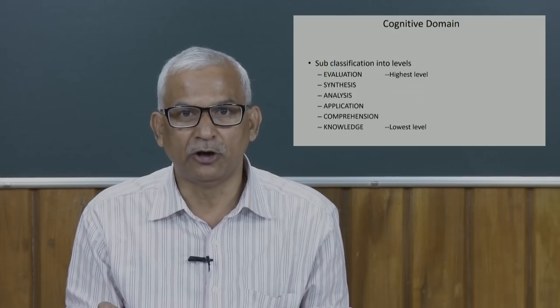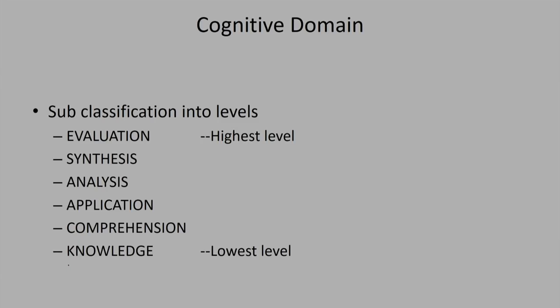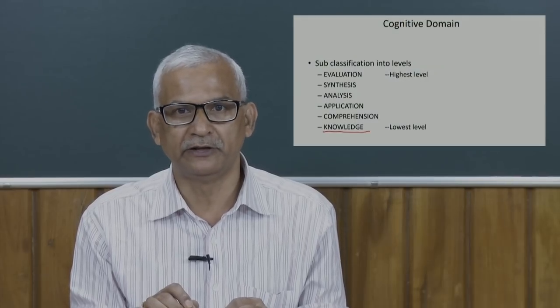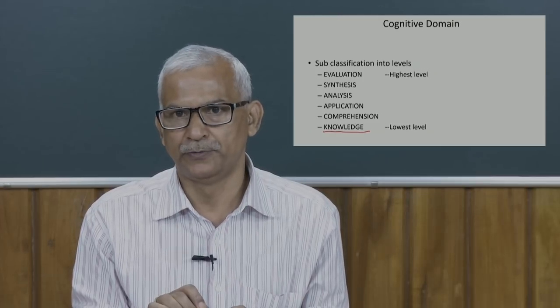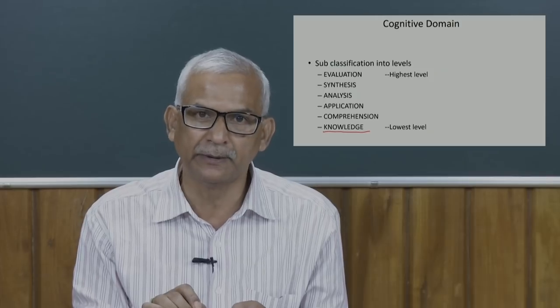There are sub-classifications or levels in every domain. In the cognitive domain, the sub-classifications start from the lowest level — knowledge — moving through comprehension, application, and analysis. When you get a new scenario, you will be able to analyze it. Then comes the design or synthesis level, where you can design a new system, and finally you can evaluate the system. When a student achieves the highest level, it is assumed they have already mastered the lower levels. While delivering lectures, we will indicate which portion is addressed at which level.